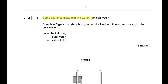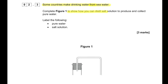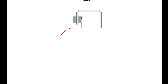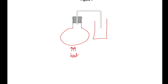Some countries are making drinking water from seawater. To distill a salt solution and collect pure water, we draw a round-bottomed flask, apply a heat source, and place a condenser leading into a container where we collect the pure water. We label the pure water and salt solution accordingly.